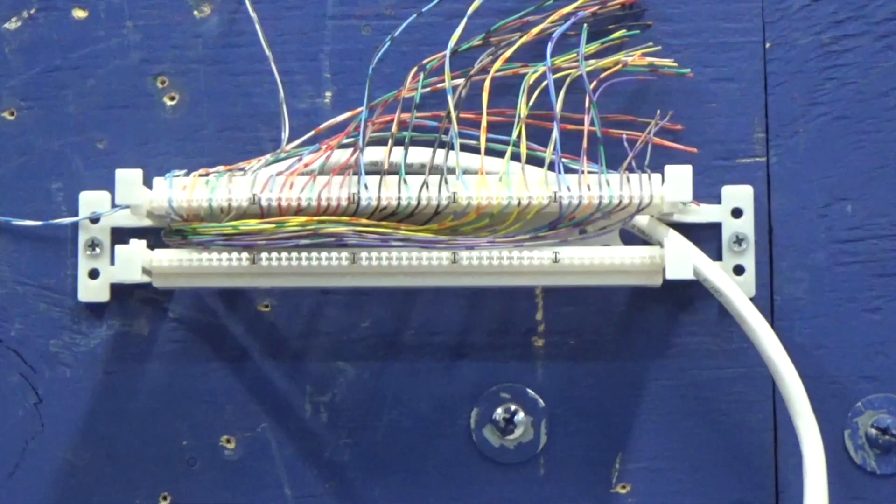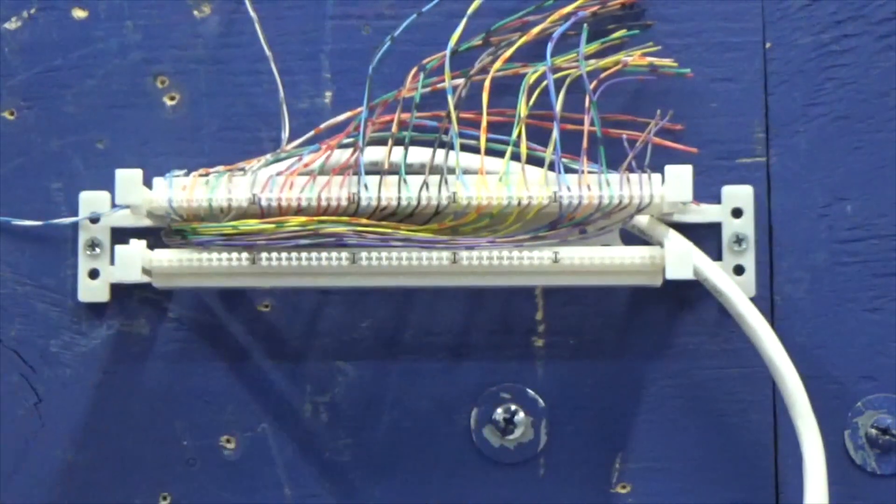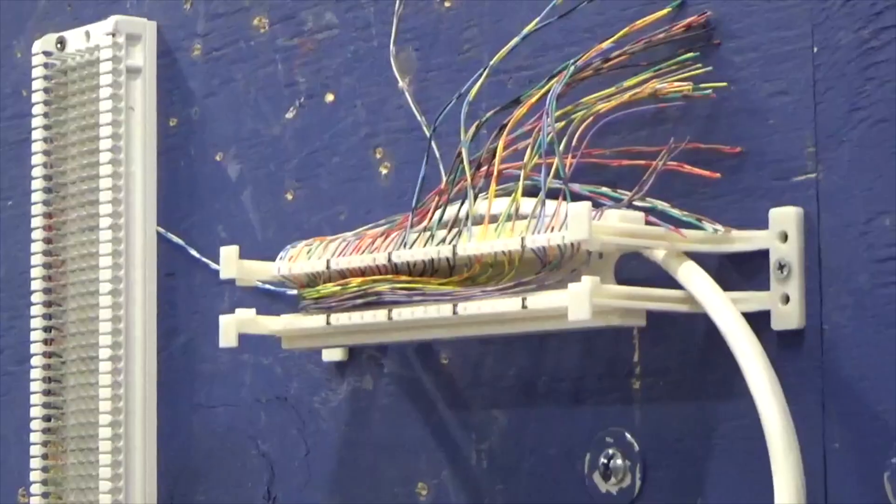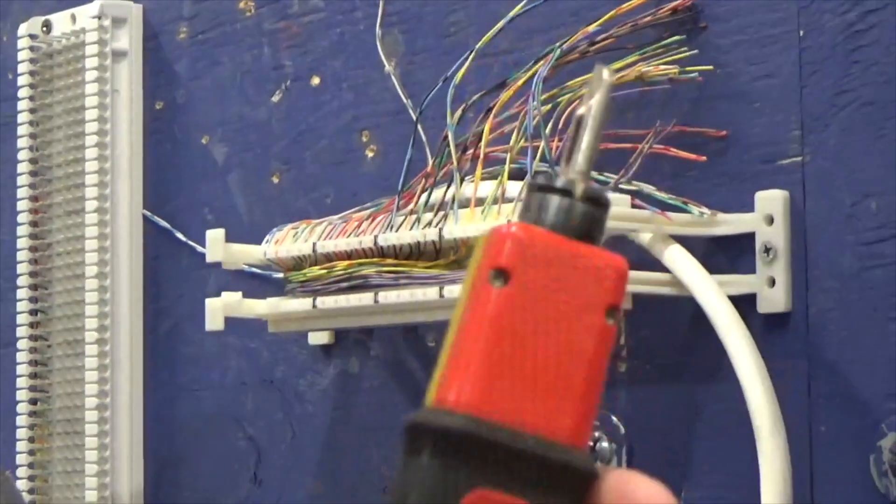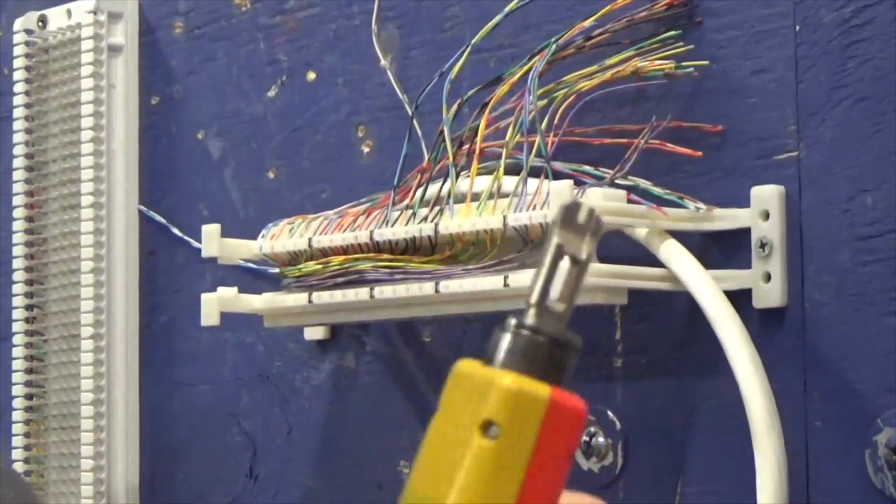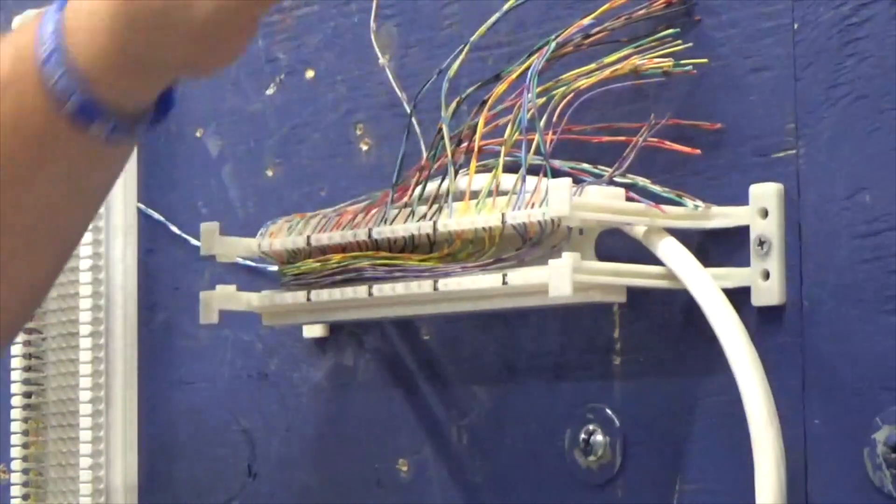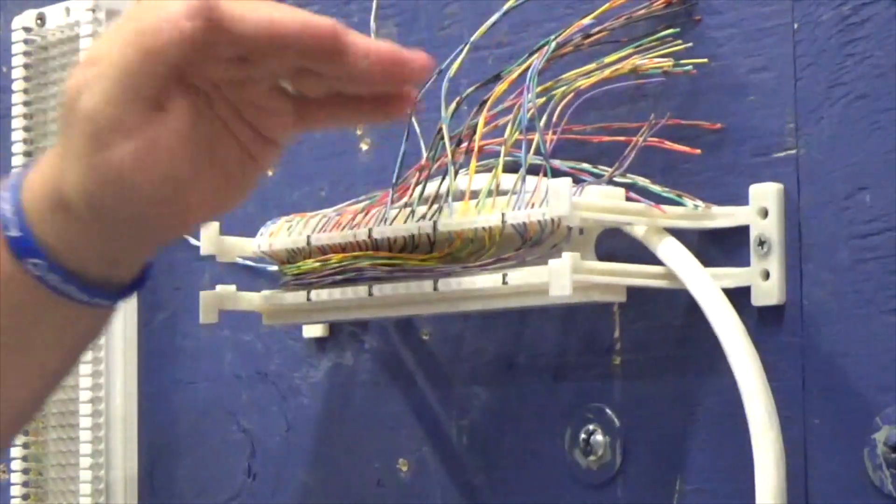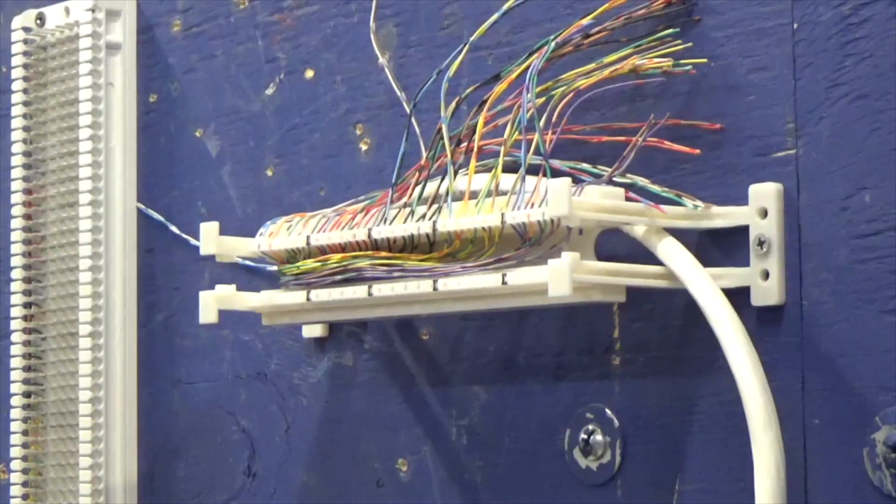Now you'll take your 110 punchdown tool and you'll punch everything down. A punchdown tool has a cut side and a non-cut side. The cut side is the side you're going to cut that's going past, that's the excess wire. So that wire is what you're going to be cutting off. All we have to do now is punch it down.